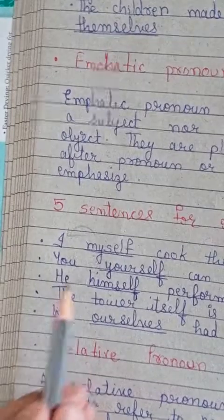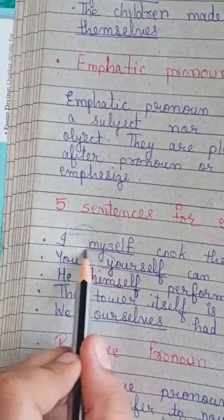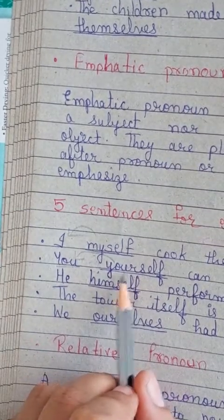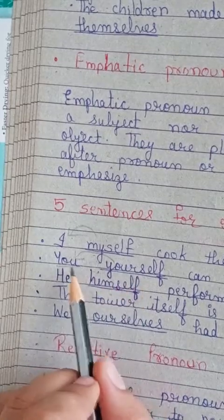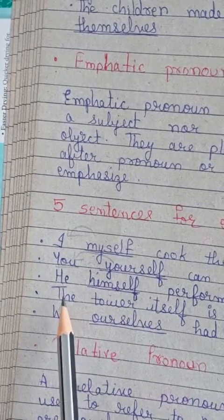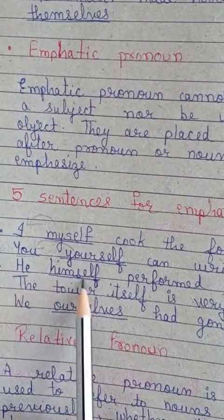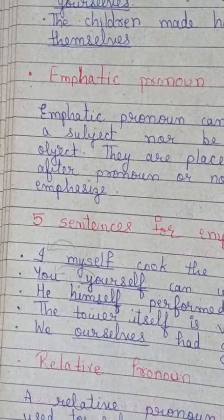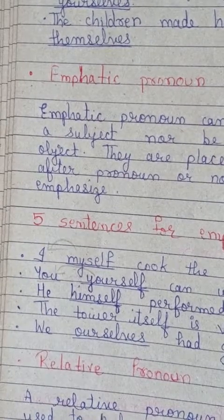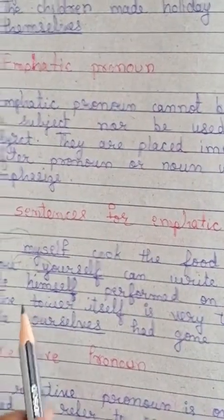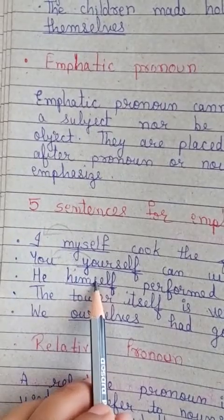Here the emphatic pronoun 'yourself' is used right after the pronoun. Next: 'He himself performed on the stage' — meaning he performed on the stage by himself. We could simply say 'He performed on the stage,' but 'he himself' adds emphasis. So 'he' is the pronoun and 'himself' is the emphatic pronoun.